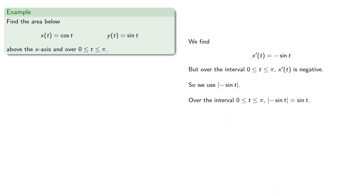And so the correct area will be given by the integral sine of t, sine of t dt, or sine squared of t. Which we can evaluate to get pi halves.